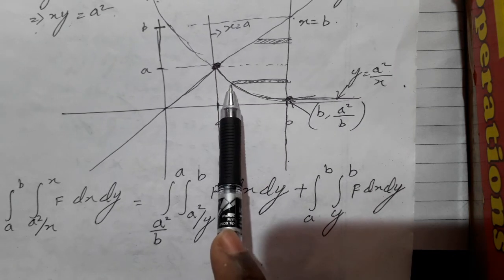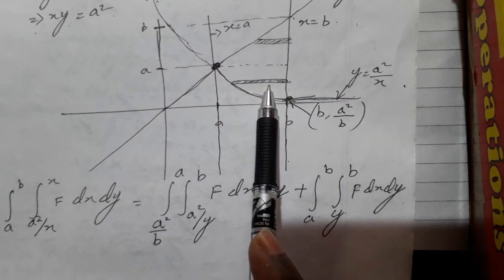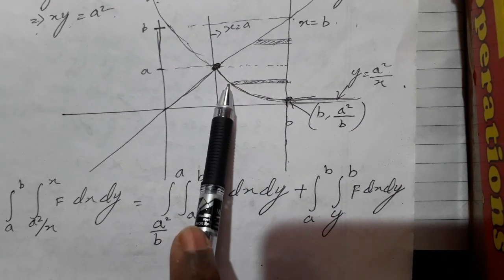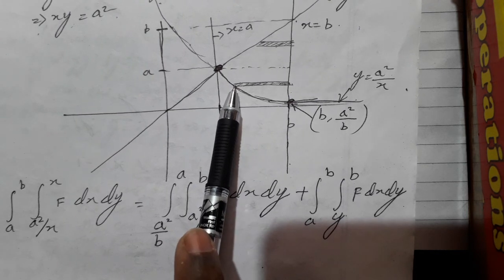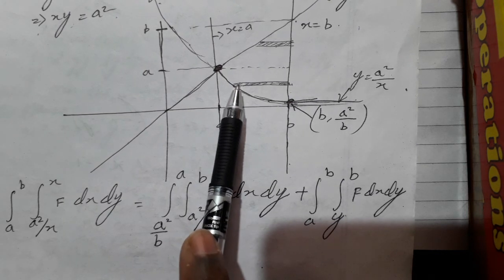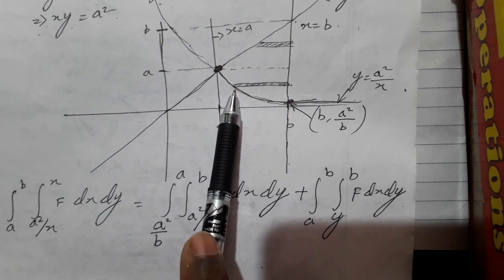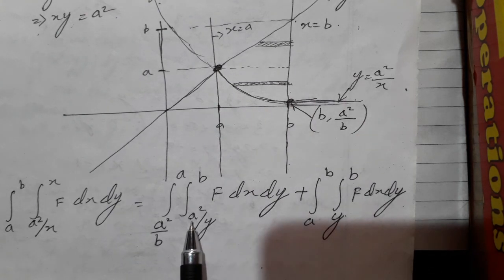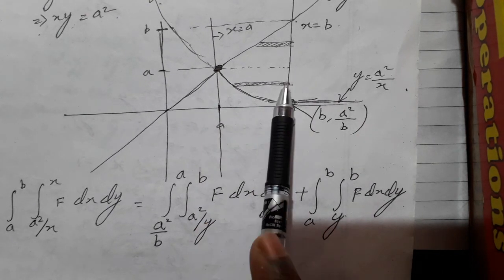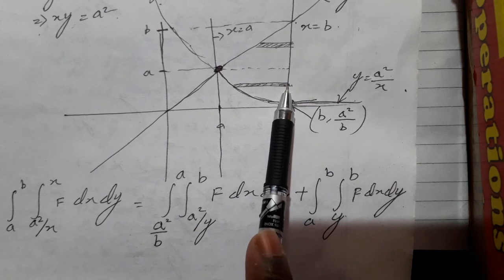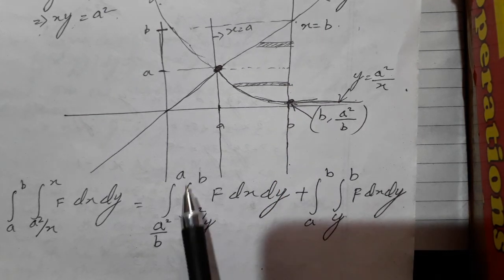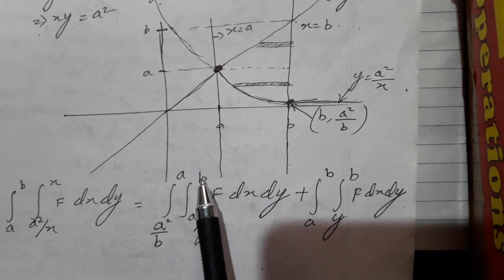I'll take a strip here. Since this strip touches the curve xy equal to a square, from this curve we can find the value of x, so x is a square by y. Then this strip is also touching this line, and the value of x there is b. So we get x ranging from a square by y to b.